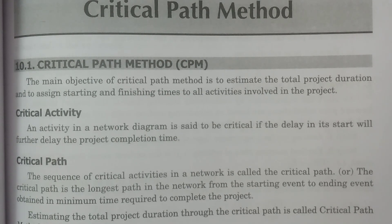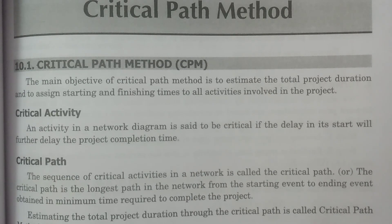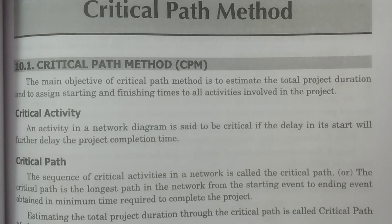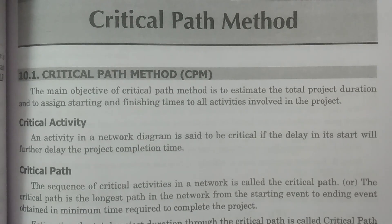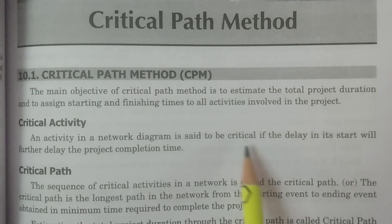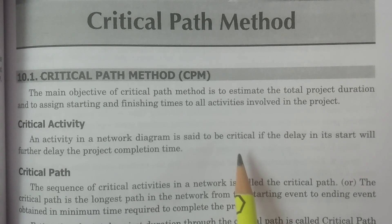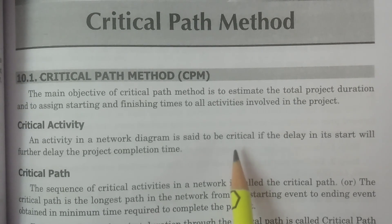For example, if we construct a five-floor building and consider the construction of the first floor, second floor, etc. — if you delay the construction of the first floor, automatically the entire project will be delayed: the second floor, third floor, and the total completion of the project will also be delayed. So whichever activity, if delayed, leads to further delay in the completion of the project time, that activity is called critical.